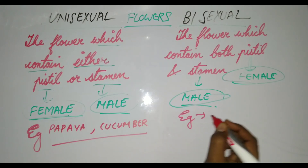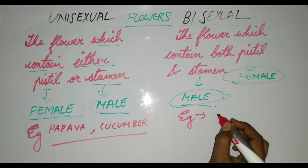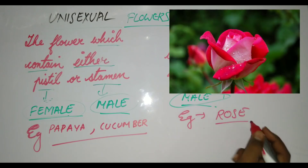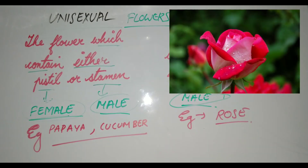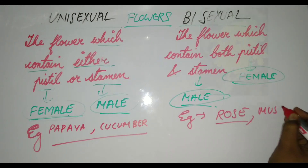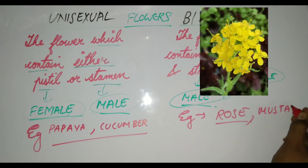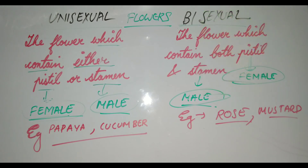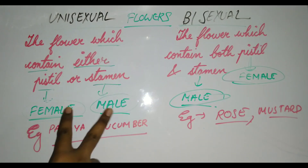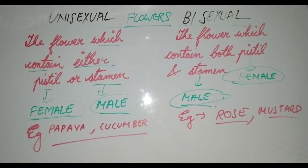For bisexual flowers, rose is the best example. Another example is the mustard flower. All of these are bisexual flowers. The key concept is based on the presence of female and male reproductive parts in the flower.